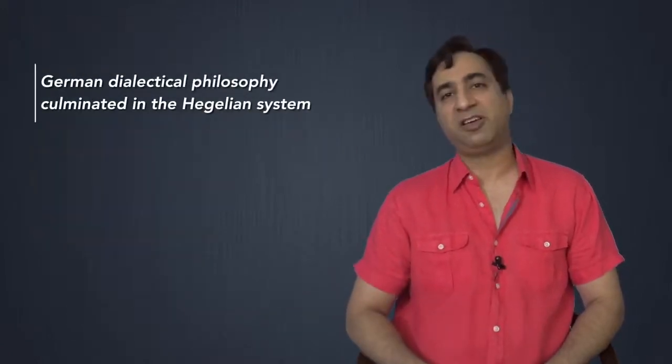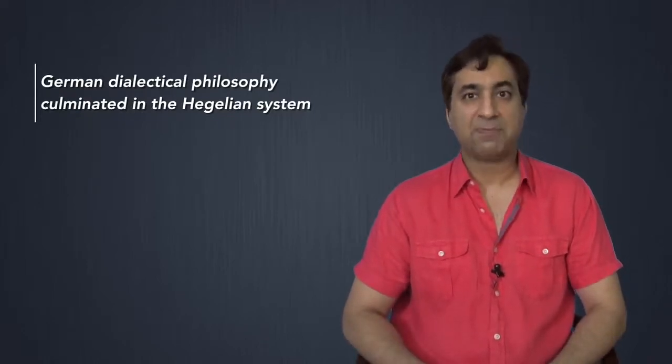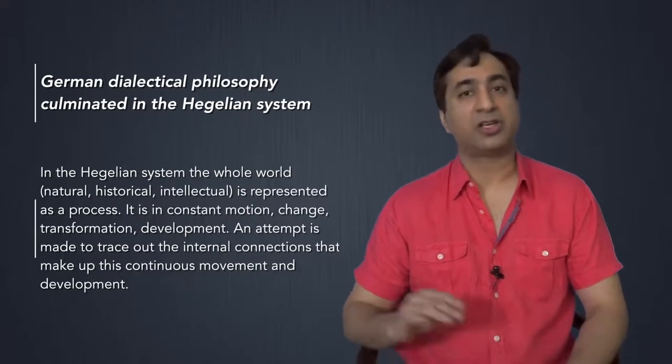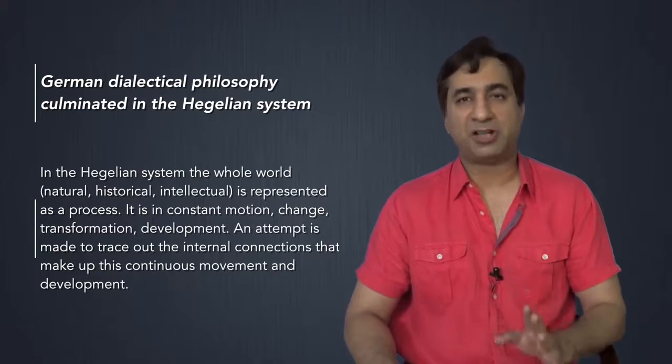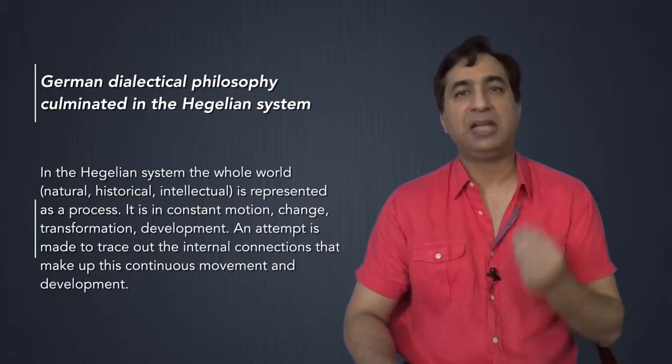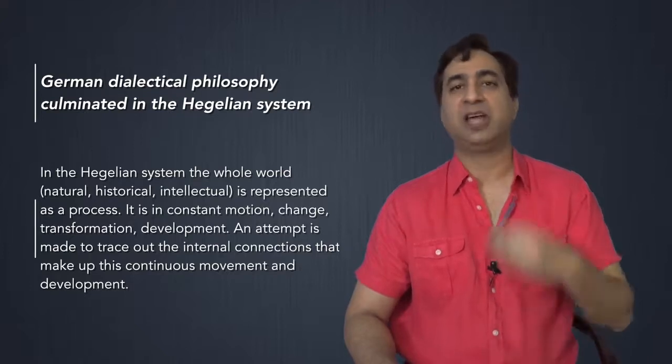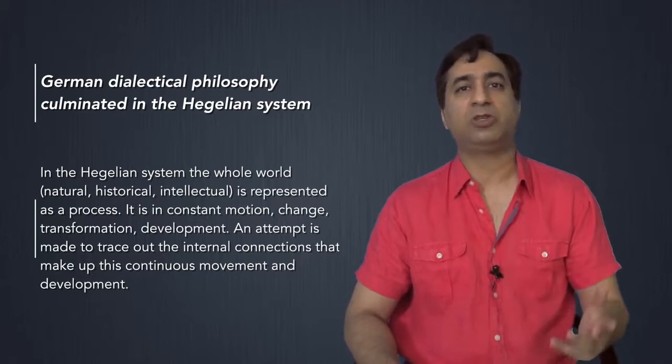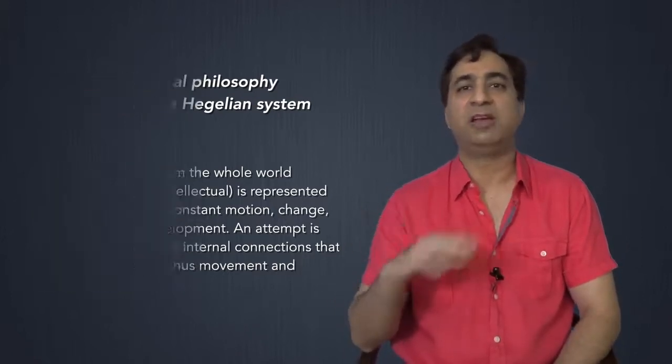So Kant really came to the conclusion that the solar system was itself in the process of evolution, that all the stars were in the process of evolution through dialectical thinking rather than through empirical evidence. German dialectical philosophy, of course, had culminated in the Hegelian system, says Engels. In this system, the whole world, the natural world, the historical world and the intellectual world is represented as a process. It is in constant motion, it is in change, it is in transformation and it is in in development.